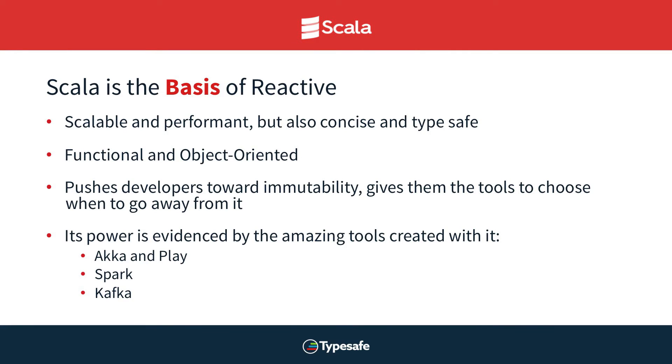Functional and object-oriented approaches aren't at odds with one another. You can build applications that leverage both paradigms to build reactive applications that are responsive to users. Scala is also opinionated enough to push developers to code in the right way by leveraging immutability, whether in the classes you're creating or in the collections you're using — tools that help you avoid shared mutable state. Its power is evidenced by the amazing tools built with Scala: Akka, Play, Spark for reactive big data, Kafka for distributed message queuing, and Mesos for leveraging an entire data center as if it were one machine.